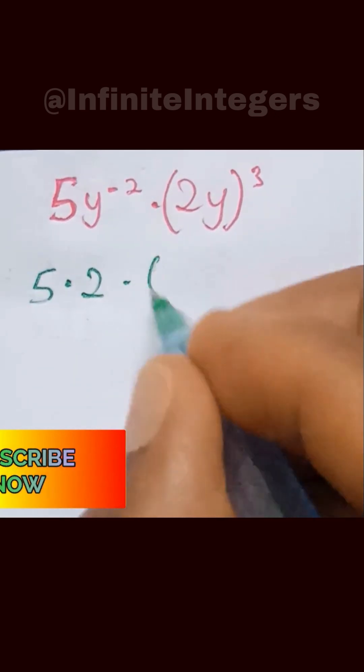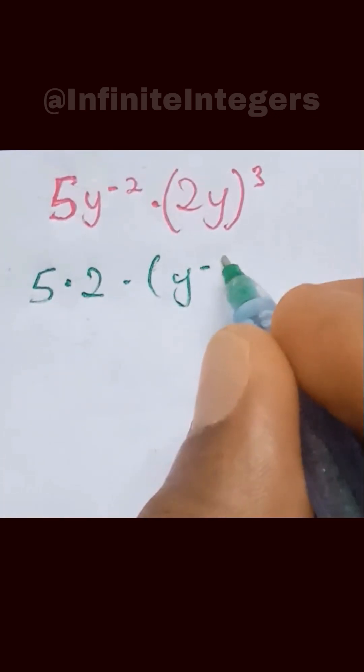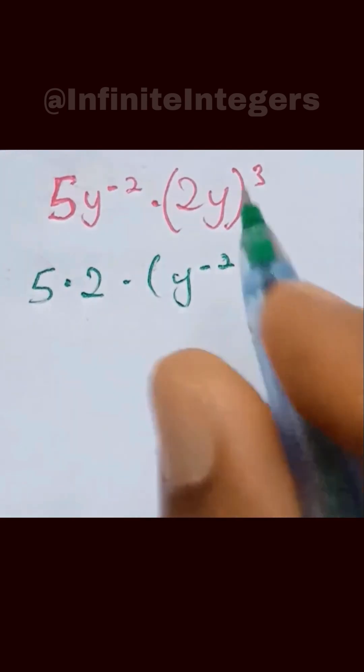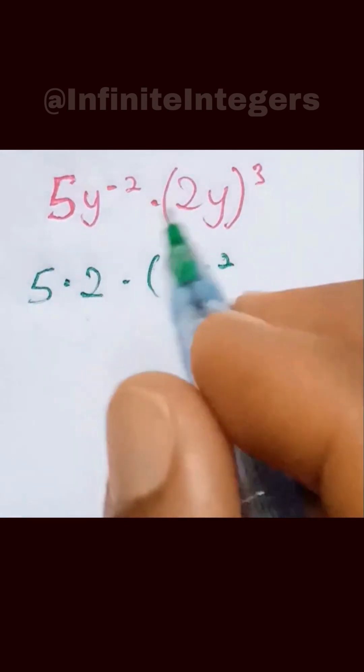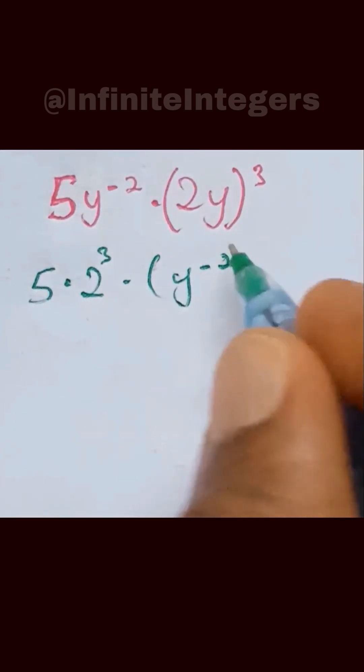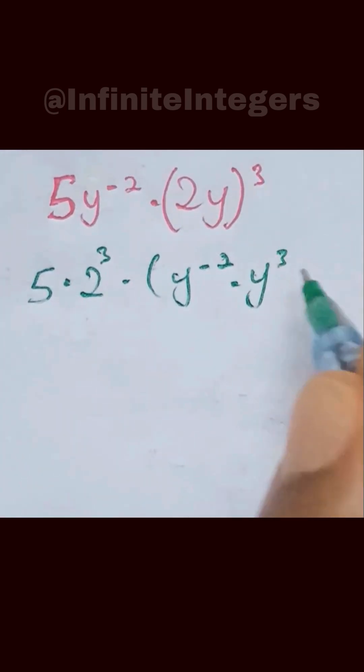Then separately, we combine y raised to the power minus 2. So this 2 will be affected by this cube. So we have cube over there, and we have y cube.